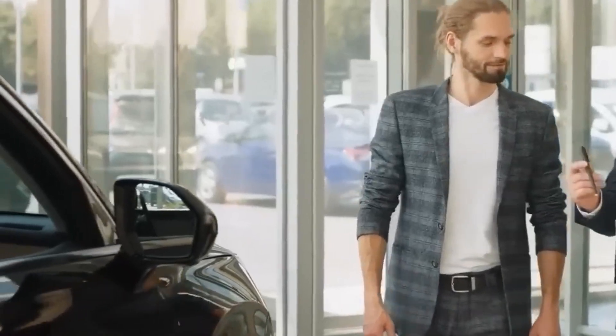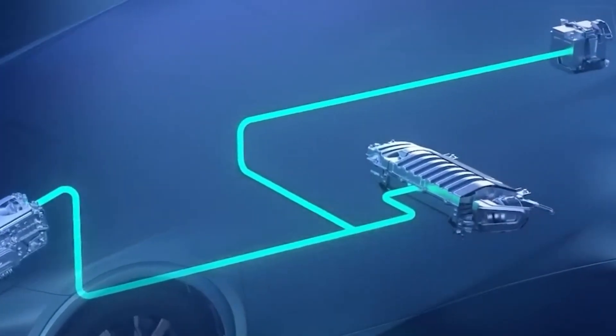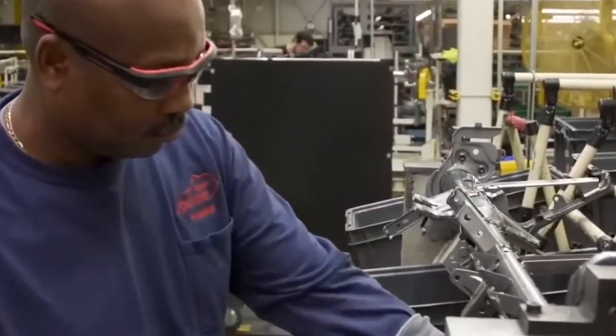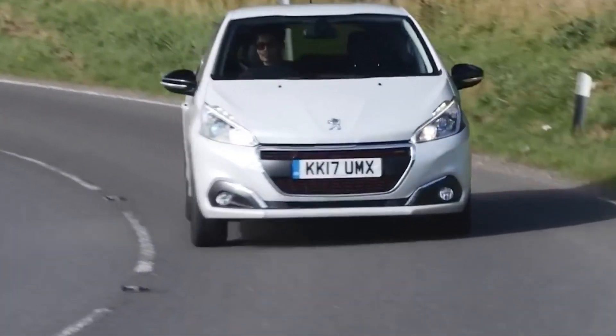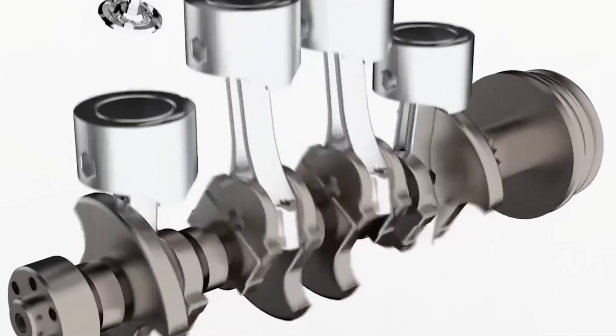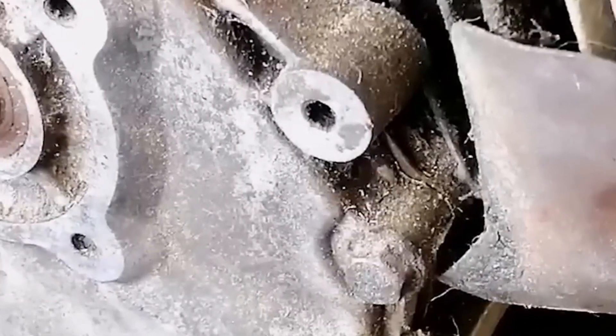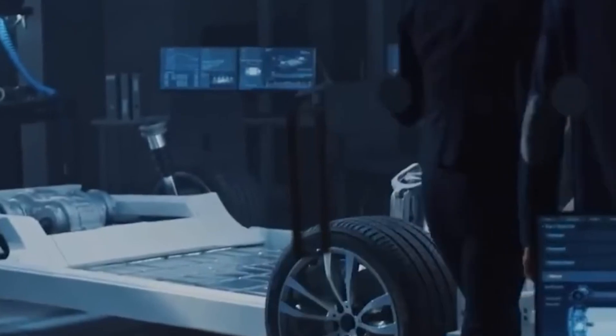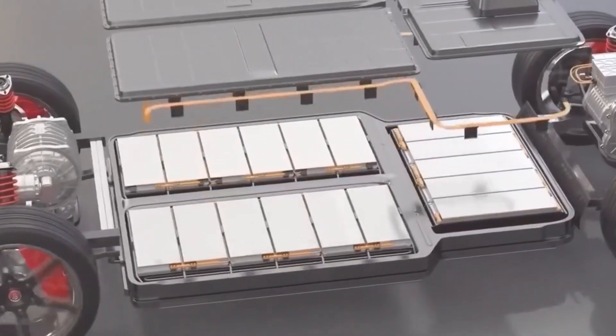The hydrogen combustion engine, particularly the 1.6-liter three-cylinder turbo engine in the Corolla Cross hydrogen prototype, is a significant achievement. It uses high-pressure hydrogen direct injection to optimize performance and efficiency, producing power comparable to gasoline engines thanks to its turbocharger. Hydrogen combustion engines are more efficient than traditional engines, especially under high-load conditions, resulting in better fuel economy and lower emissions.